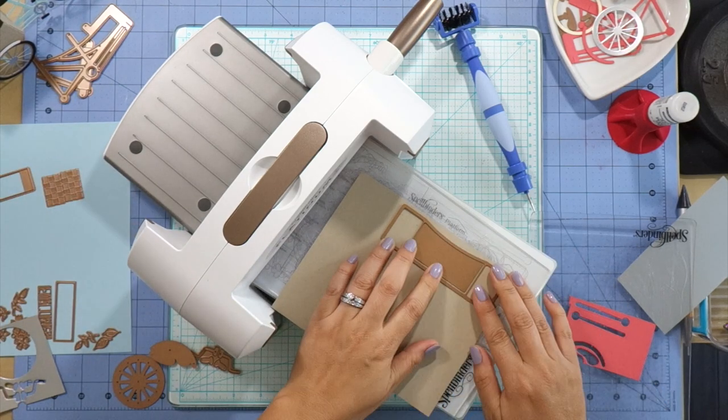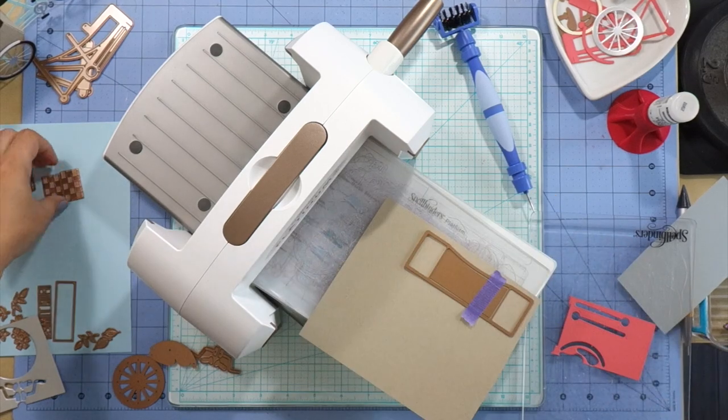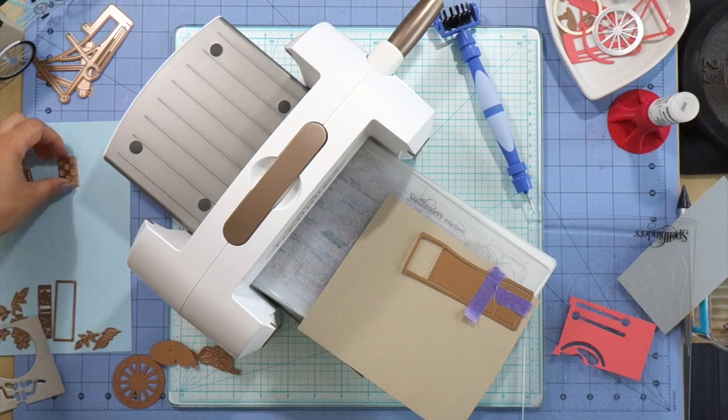Now this piece here is going to create your basket. You can add these three inner pieces which will emboss the basket weave texture or you can keep them off if you want your baskets to look smooth.